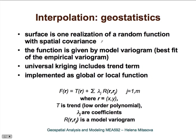A very sophisticated approach to interpolation is based on geostatistics. The theory interprets a surface as one realization of a random function that has spatial covariance. This function is given by a model variogram, which is found by fitting it to an empirical variogram computed from the data. This is the first method that includes a trend term — that would be universal kriging. The method can be implemented as a global function using all points, or often as a local function to avoid large systems of linear equations, applied only to the closest N points.